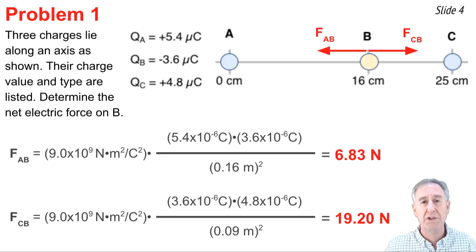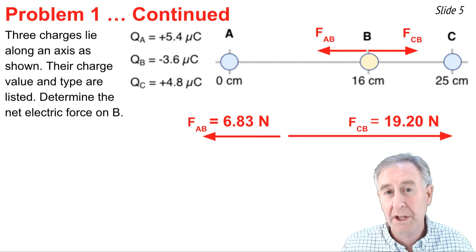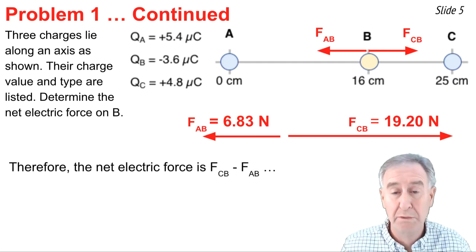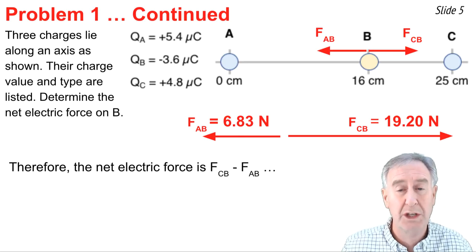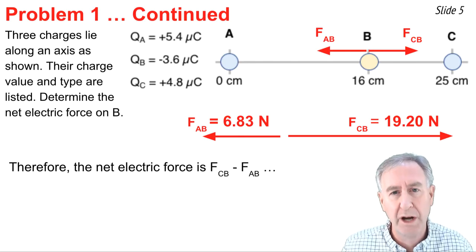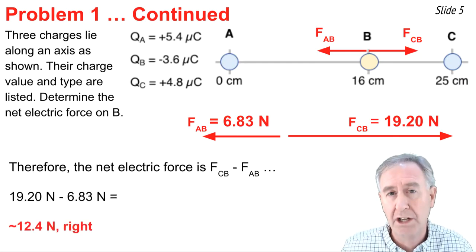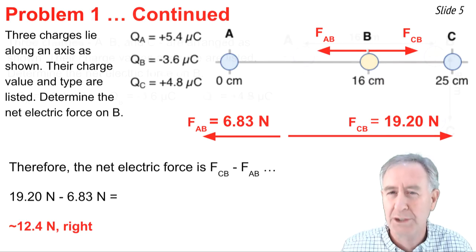I now know the two individual forces acting upon charge B. So now we can calculate the net electric force on B. It's simply the sum of the individual force vectors. Since they're going in due opposite directions, calculating the net force involves subtracting the smaller from the larger number and when I do that I end up getting approximately 12.4 Newtons to the right.